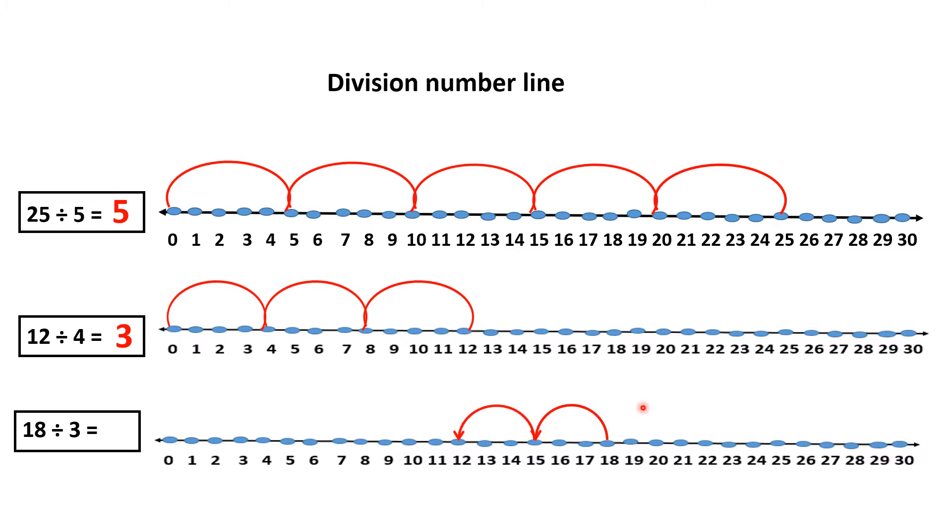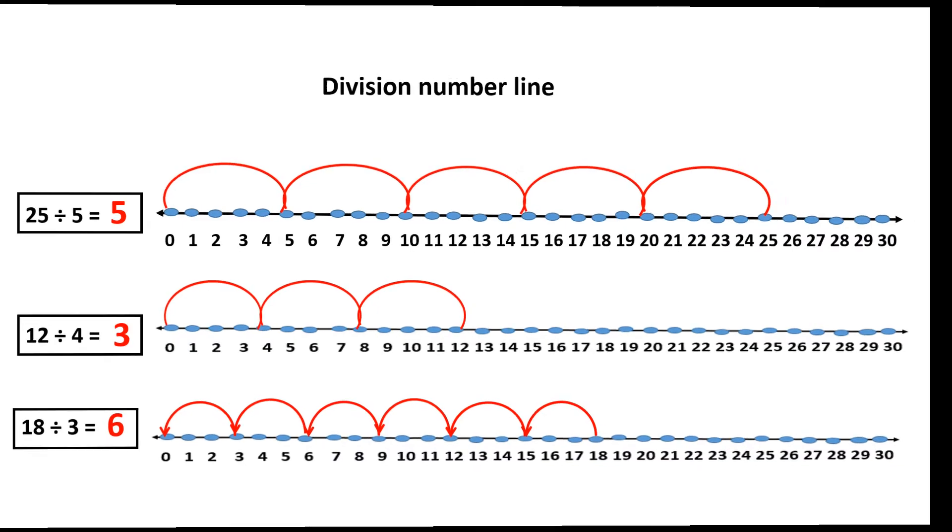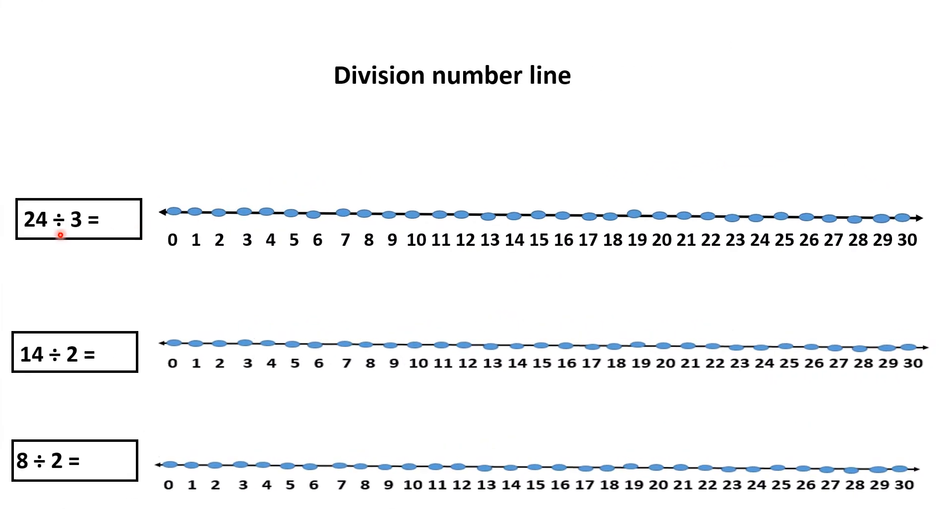Question is 25 divided by 5. Here bigger number is 25. Stand at number 25 divided by 5. 5 means we will count 5 steps. Start from number 25. Start jumping from 25. 24, 23, 22, 21, 20. Count 5 steps and land at number 20.